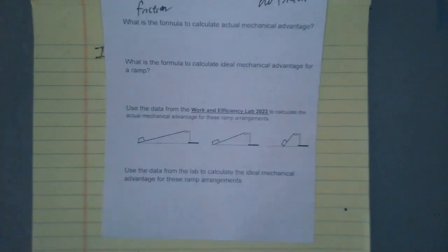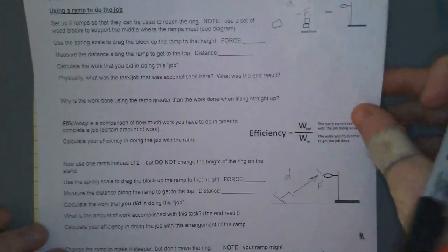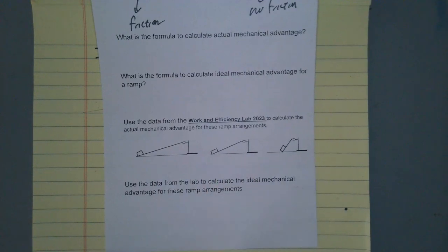So, what I'll need you to do now in your homework for tonight is you're going to go back and you're going to use your lab data, this lab activity here, and you're going to calculate the mechanical advantage and the ideal mechanical advantages for those three ramp arrangements. In order to get a done stamp on this, you have to have this completed by the start of the class period tomorrow.